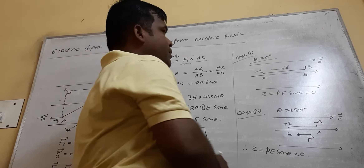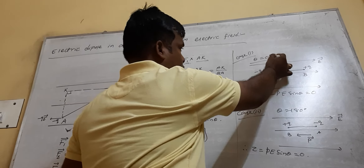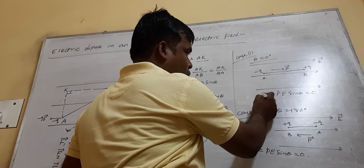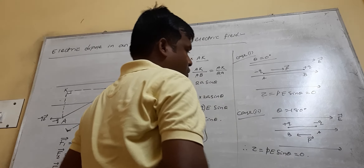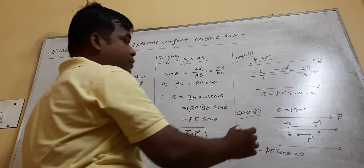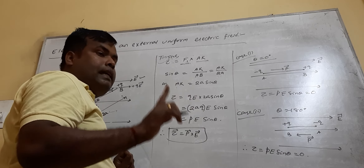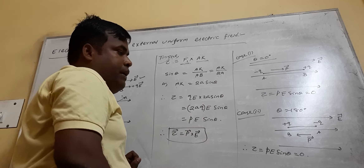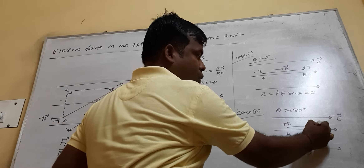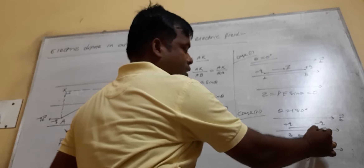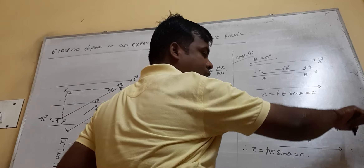Now, let us come to some special cases. Case 1: if theta equals zero, meaning the angle between the dipole moment vector and the electric field is zero. Here, P vector and E vector are parallel to each other, so theta equals zero. Then tau equals PE sin theta. As theta equals zero, sin zero equals zero, so tau equals zero.